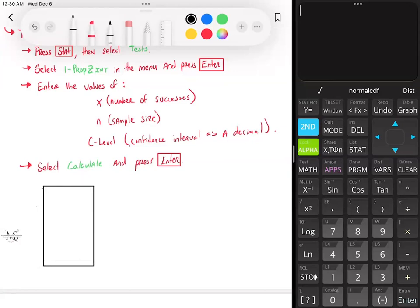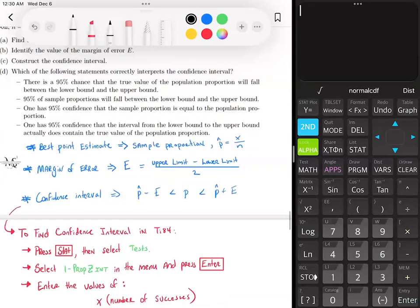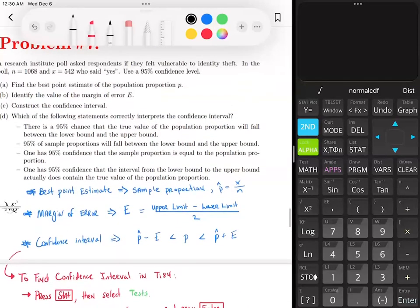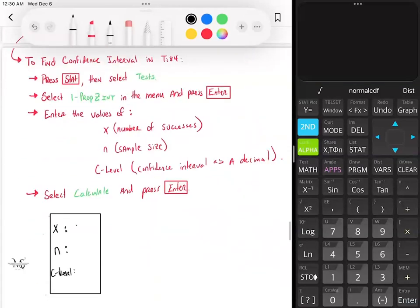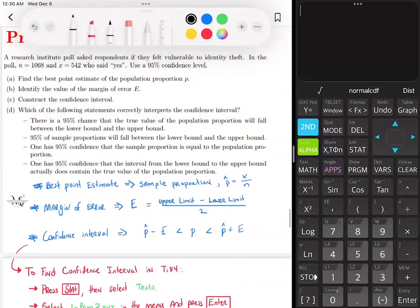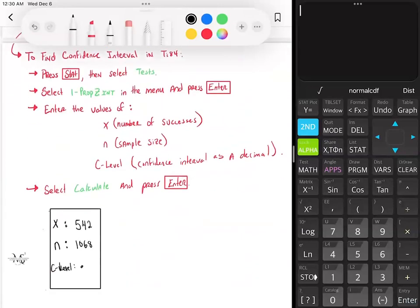So you're going to have a box. That box represents your screen. And on your screen, you need to label what's your X, N, and C level. The problem tells you exactly what these three things are. X is the 542, and N is going to be your 1068. So you have 542, 1068. The confidence level is going to be 95% or 0.95.